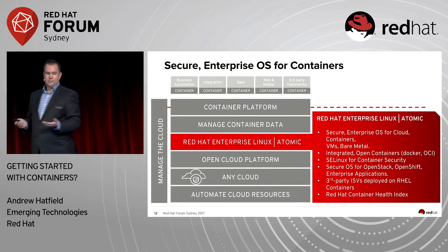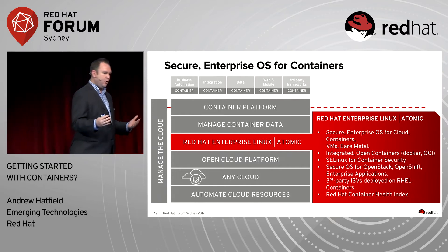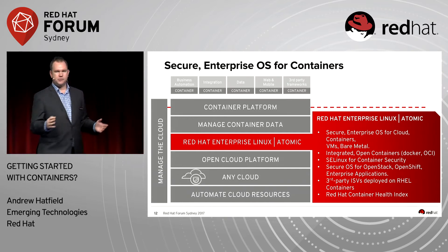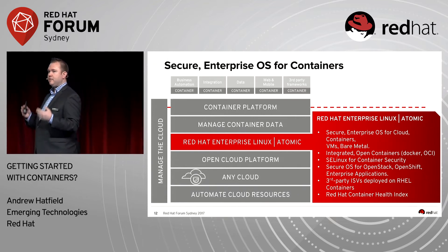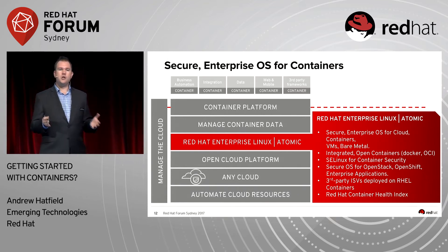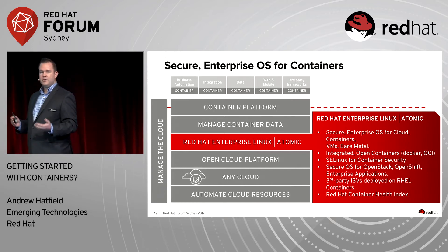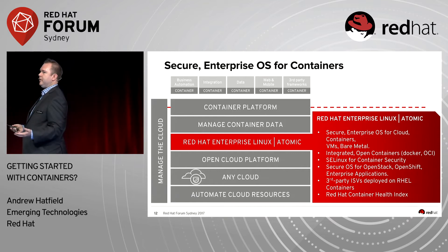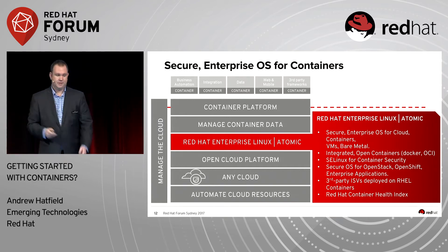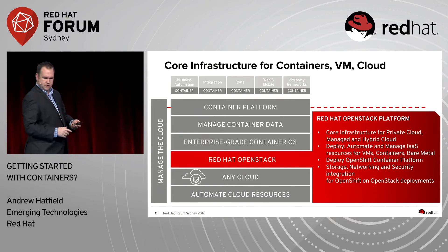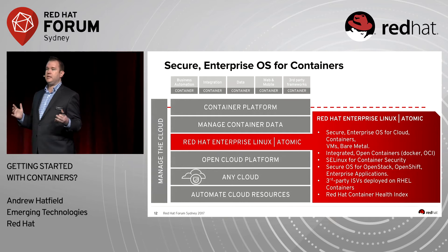Then there's the operating system. Who here has heard of Red Hat Enterprise Linux? There are more people working on the kernel inside Red Hat than some of our competitors have in their entire organization. There is no one that knows Linux better than Red Hat. But containers are supposed to be thin, fast, and scalable — a full operating system, as awesome as RHEL is, is too fat. So this is where we've created a container spin called Atomic.